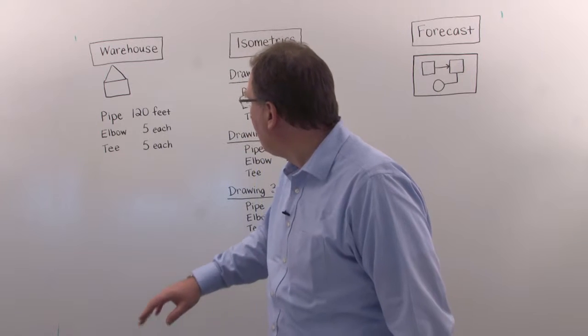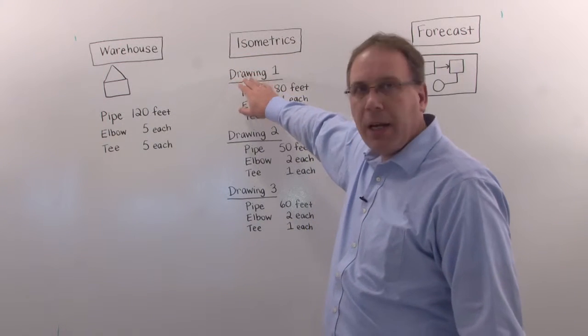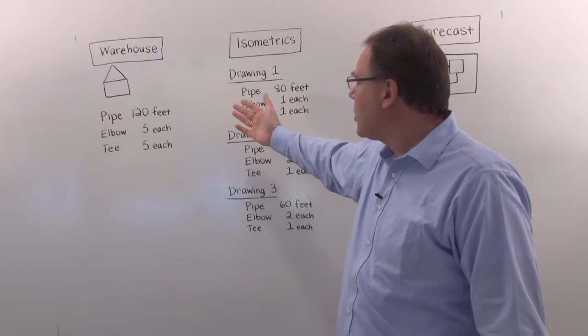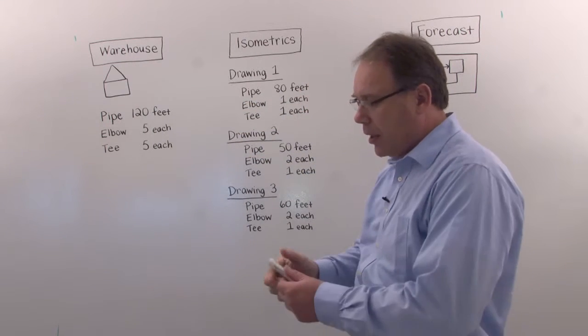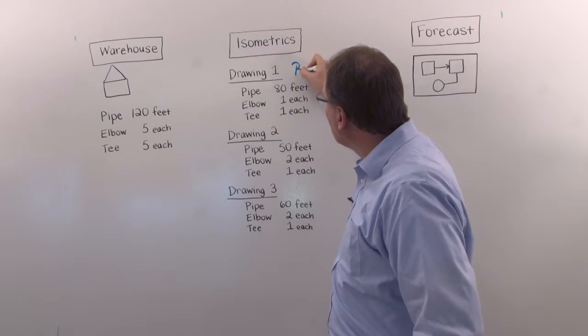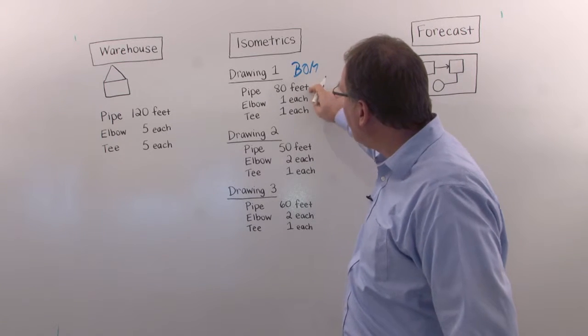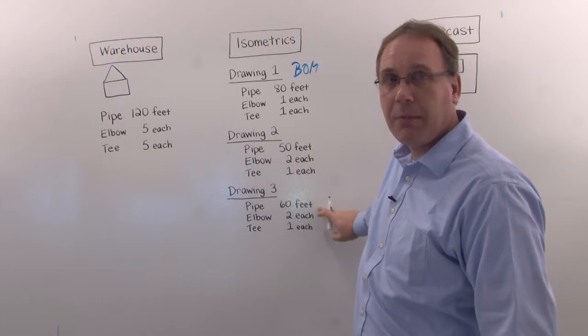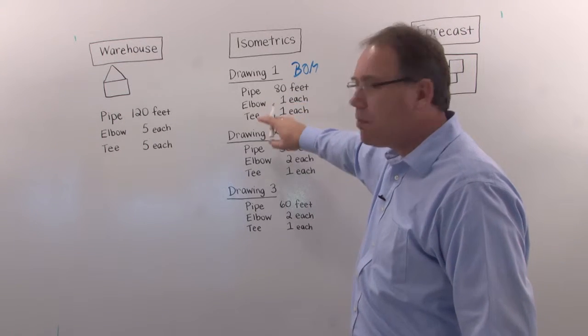Now engineering obviously is building drawings, created drawings called isometrics. These isometrics, I can write this down, bill of materials. So that's a bill of material of an isometric, number one, number two and number three. And requires this material.